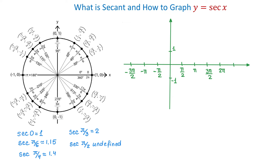Looking at the x-axis, we will have vertical asymptotes at negative 3 pi over 2, negative pi over 2, positive pi over 2, positive 3 pi over 2, and so on. Closer to these asymptotes, the function will be approaching either positive infinity or negative infinity. We can draw these asymptotes and use point plotting to draw the graph. However, another approach is to use the graph of the cosine function as a guide.